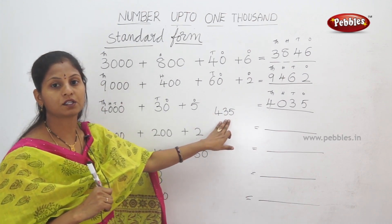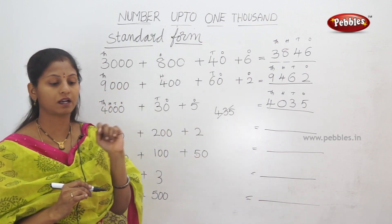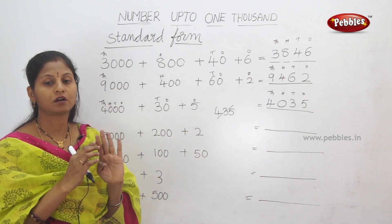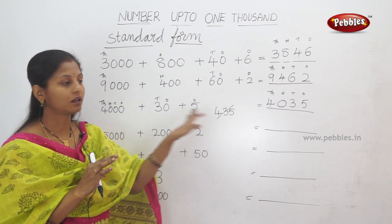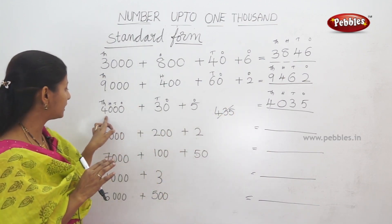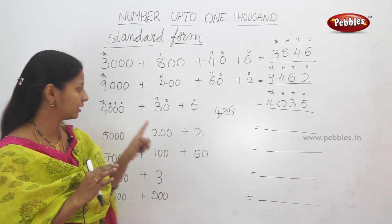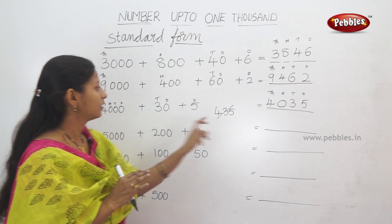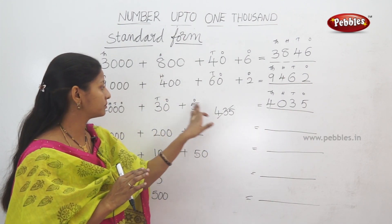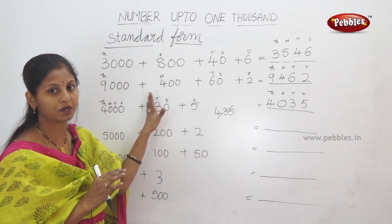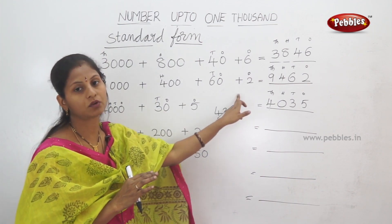How many digits are there? 1, 2, 3. Three digits. We have 4 digits in 1000. We have 3 digits in the answer — so it's wrong. 1000 is the compulsory answer. The answer should be 4 digits: 1, 2, 3, 4. If there are 4 digits, the answer is correct. If we have 0 in the 100s place and the answer is 3 digits, it's wrong.